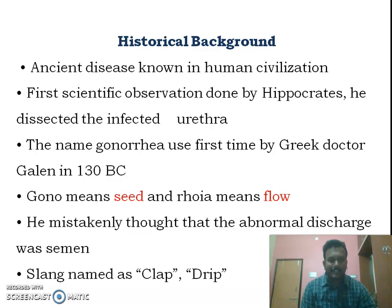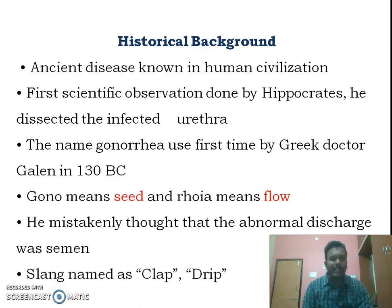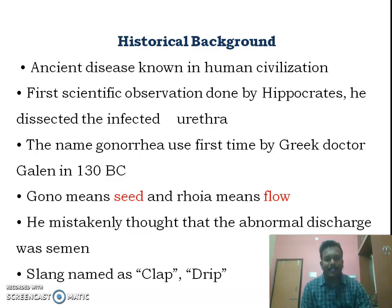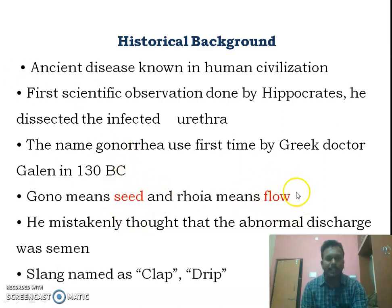Gonorrhea is a Greek word where 'gono' means seed and 'rrhea' means flow. Galen mistakenly thought the abnormal discharge coming out of the penis during gonorrhea was semen, and he named it gonorrhea.